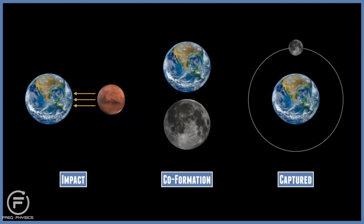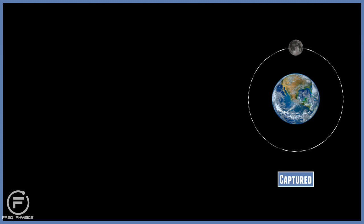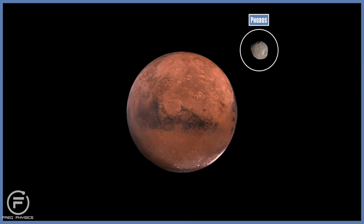The third one is called a capture theory, and this is rather plausible. A great example of this is the moons of Mars, Phobos and Deimos. These are basically captured asteroids, taken in by the gravity of Mars. So they are technically moons, even though they're not spherical.